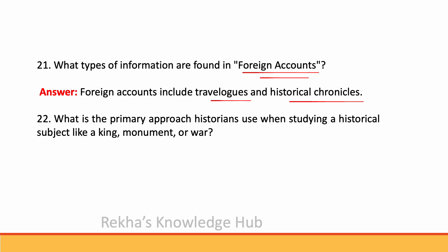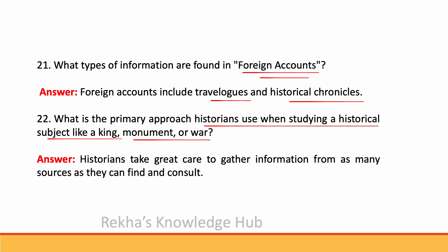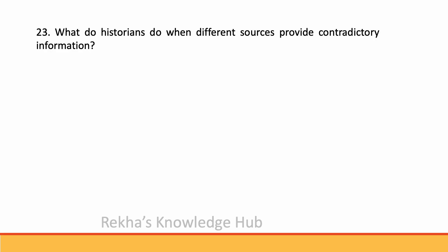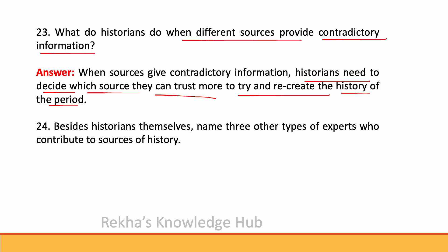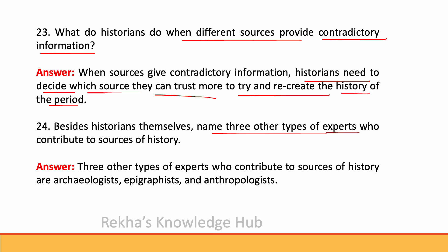What is the primary approach historians use when studying a historical subject like a king, monument or war? Historians take great care to gather information from as many sources as they can find and consult. When sources give contradictory information, historians need to decide which source they can trust more to try and recreate the history of the period. Besides historians themselves, other experts who contribute to sources of history are archaeologists, epigraphists and anthropologists.